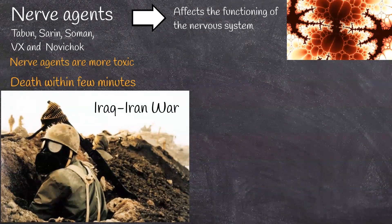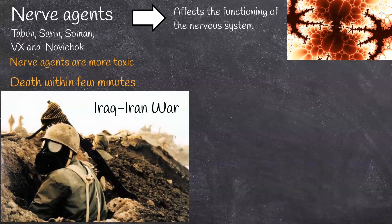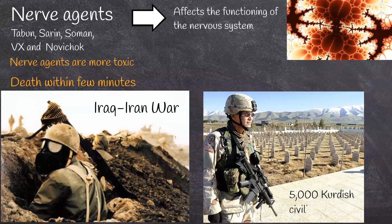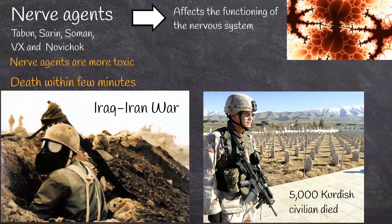Nerve agents were not used during World War II. The only known battlefield use of nerve agents was in the Iraq-Iran conflict during the 1980s war. Iraq reportedly used nerve agents against Iranian troops and later against members of its Kurdish population in northern Iraq. The largest single chemical weapon attack, killing around 5,000 people, was an Iraqi nerve agent attack on the Kurdish civilian population of Halabja. Reports indicated that mustard gas and Tabun were the primary agents used, generally delivered in bombs dropped by aircraft.